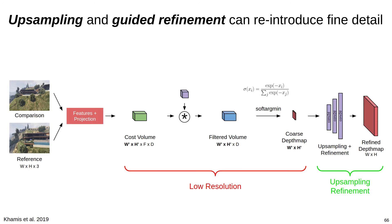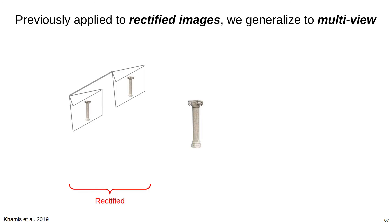The output of the coarse cost volume, though, will be a corresponding coarse depth map, which may lack high frequency information. Upsampling and refining the depth map using the input image as guidance can reintroduce these fine details, however, and do it much more efficiently than explicitly performing high resolution feature matching. StereoNet introduced this paradigm for the rectified stereo case, but we now apply it to the multi-view setting.